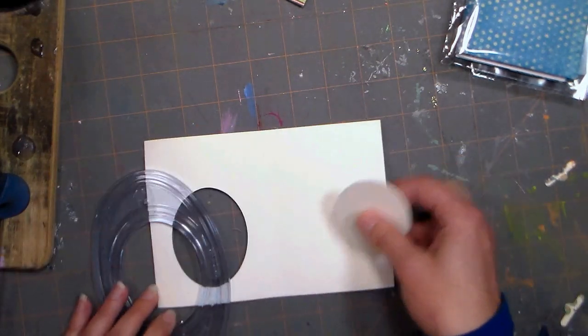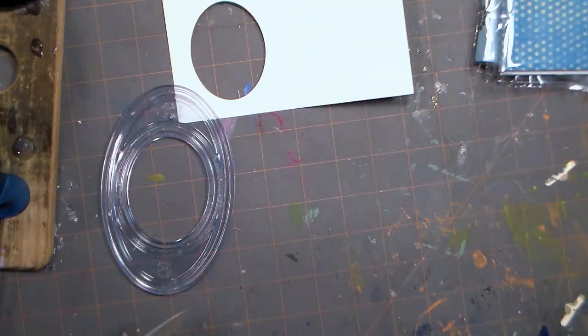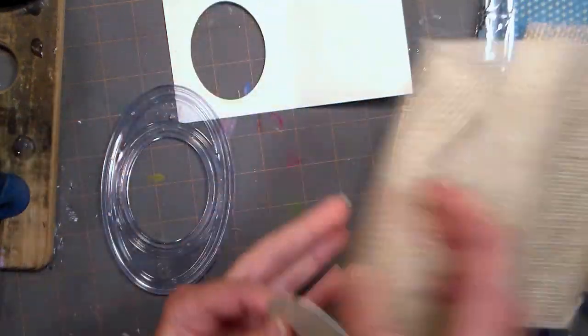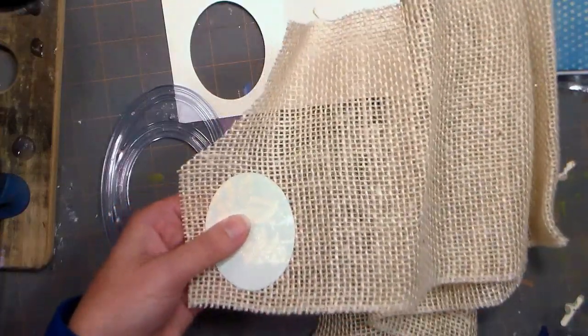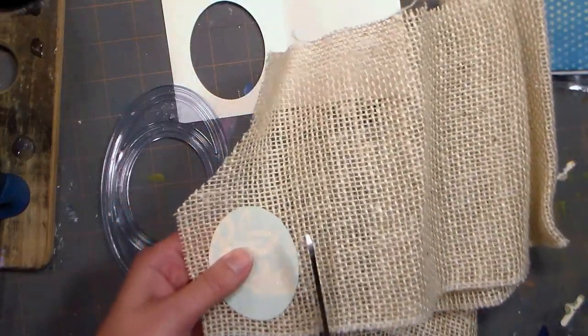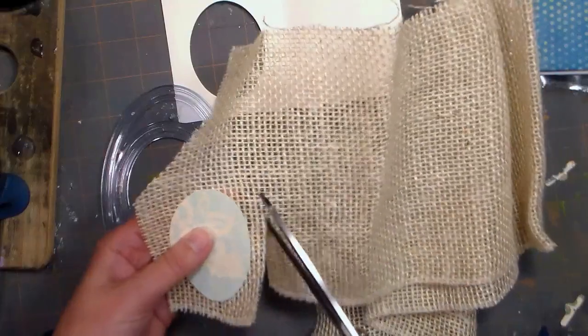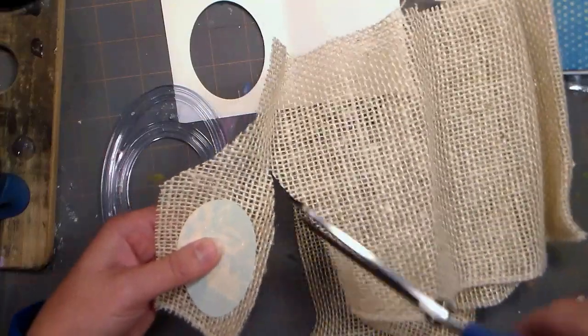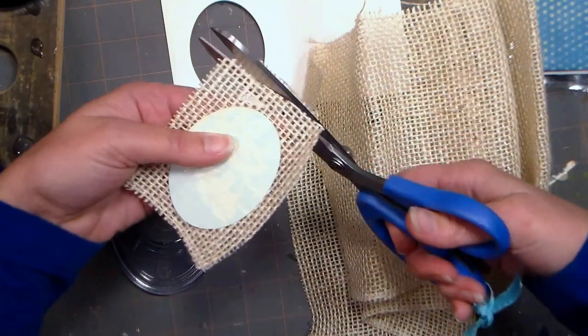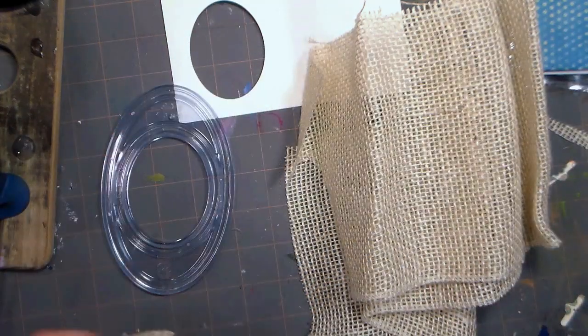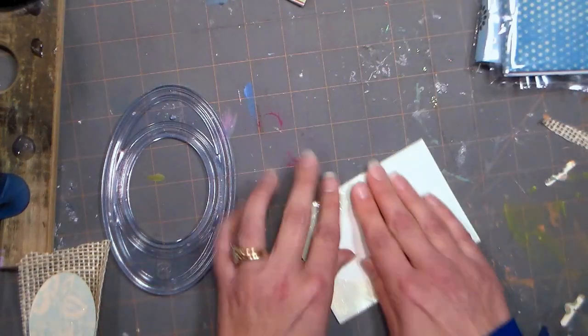All right, Papermart has this wonderful burlap by the roll, and actually a little scrap of it here because I always save my scraps because they're super handy, and what I'm gonna do is use my little cut out as a template to cut my burlap a little bit larger. All right, I can probably trim that down a little bit, so I've got this a little bit larger than my little cut out there, you could use a paper punch too if you had any big paper punches.